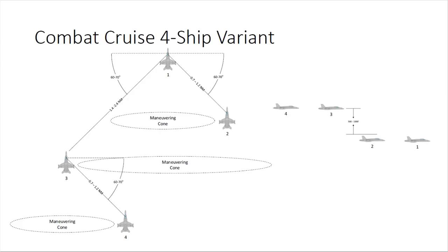Combat cruise also has a four-ship variant, very similar to administrative cruise. One and two maneuver as a section, three and four maneuver as a section, with three maneuvering off of one. One main difference is that three and four maintain 500 to 1,000-foot step-up behind one and two. This provides good visibility of the lead section and gives the second section an energy advantage over the first section, which also improves maneuverability.